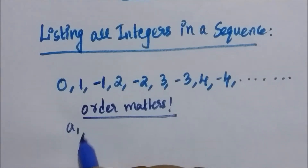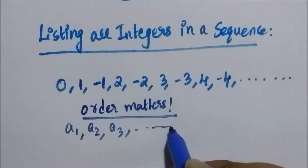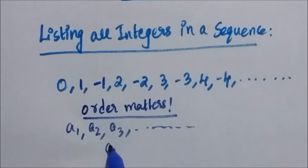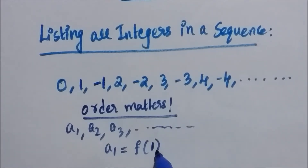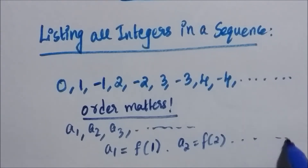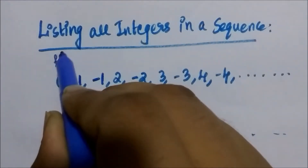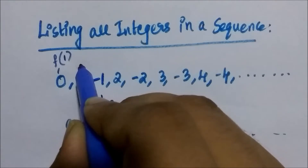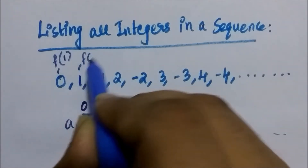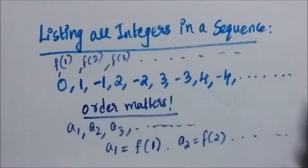Why does order matter? We know that if we can express the elements of our set S in a sequence like a₁, a₂, a₃, and so on, then we can write a₁ as f(1), a₂ as f(2), a₃ as f(3), and so on, where f is a bijection or a one-to-one correspondence from the set of positive integers to our set S.